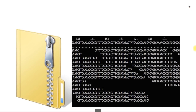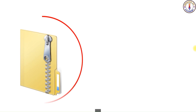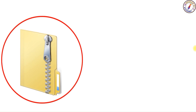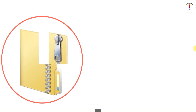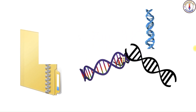Why is BGZF important for bioinformatics? Number one: compression with random access. For large files like BAM, simple gzip compression would require decompressing the entire file to access data at a specific location. BGZF's block structure and the virtual offset allows tools to jump directly to the relevant compressed block, significantly speeding up data retrieval.